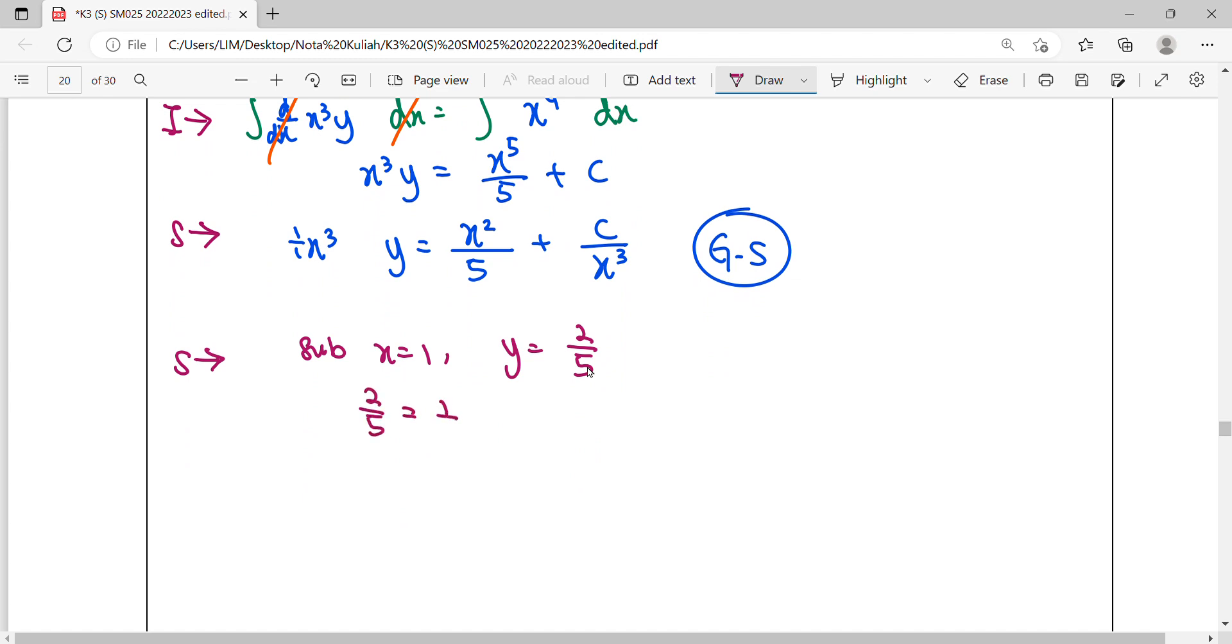Substituting: 2/5 = 1/5 + c, so c = 1/5. The particular solution is found by substituting c = 1/5 back into the general solution.